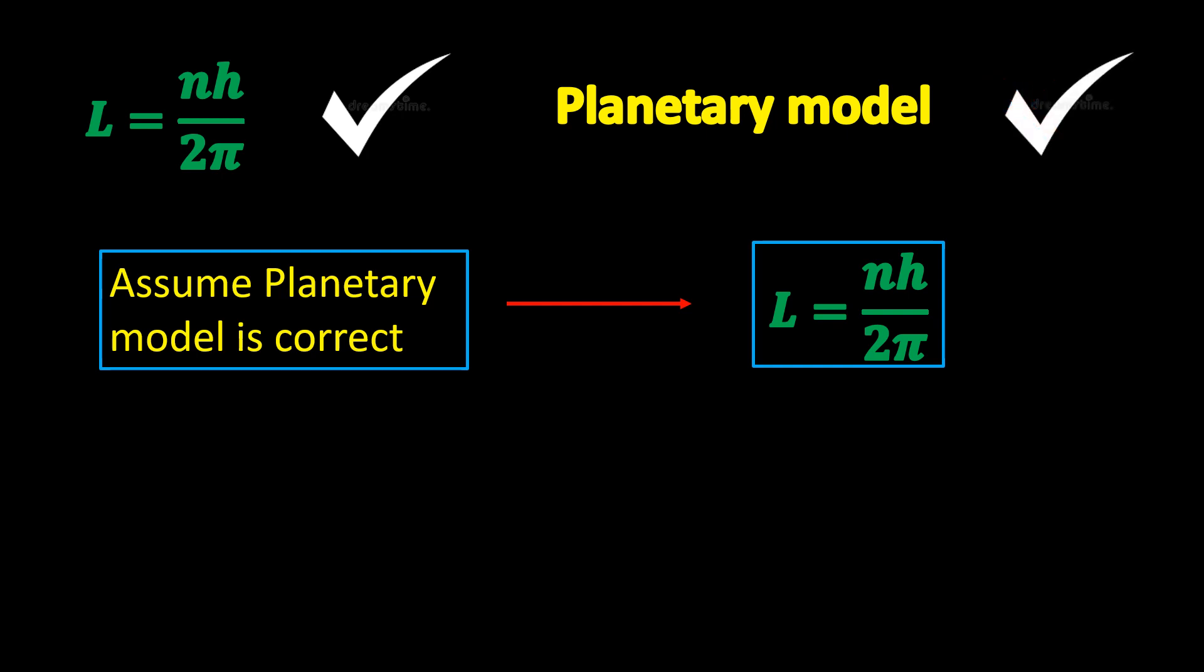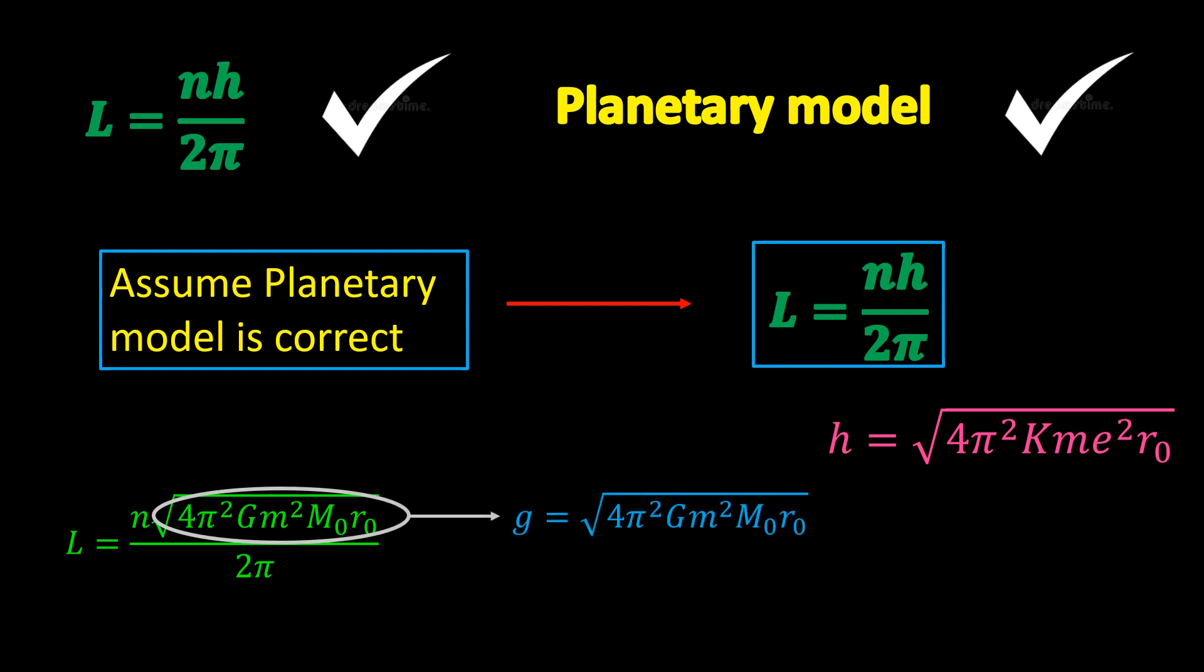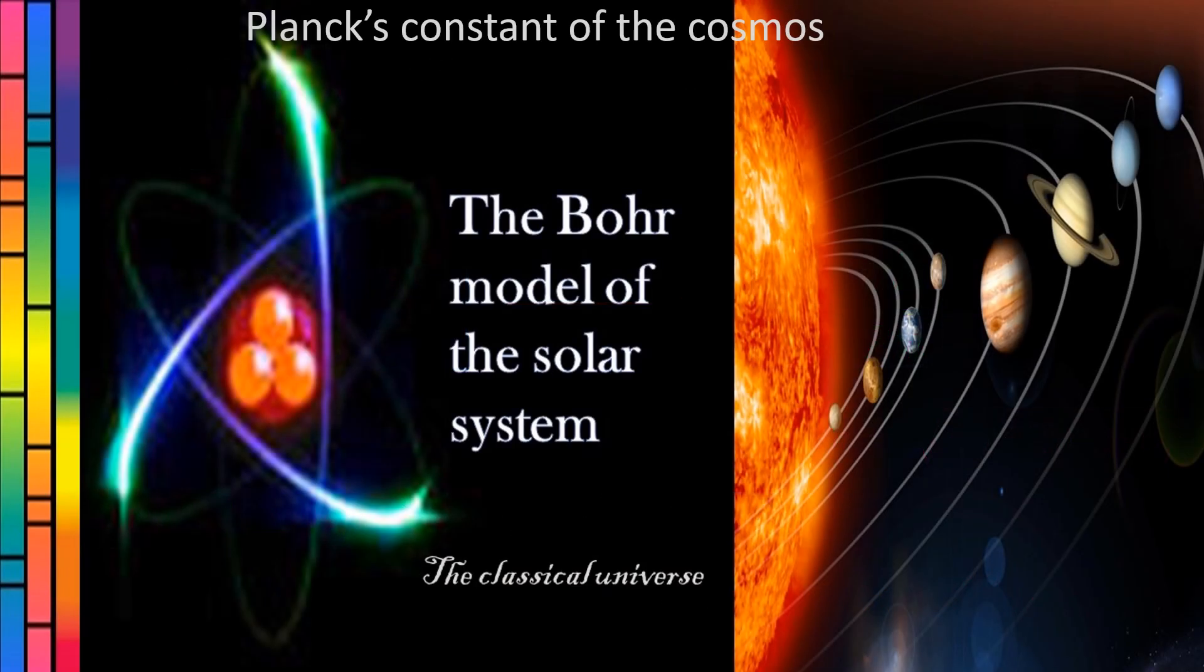So the Planck's constant is equal to the square root of 4 pi squared times the electrostatic constant times the mass of an electron times the square of the electronic charge times the Bohr radius. You can follow this same procedure to derive the angular momentum for a planet, which will be of the same form as follows, from which we can extract in the same way the Planck's constant of the cosmos, G, equal to this. Its value is 1.72 exponential 42 joules second. Check the video Planck's constant of the cosmos for details.